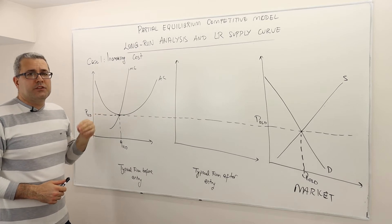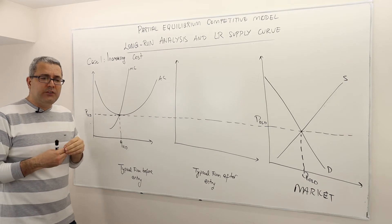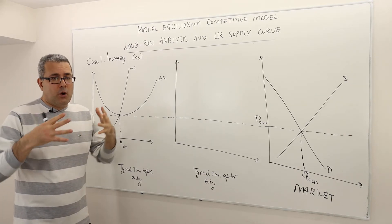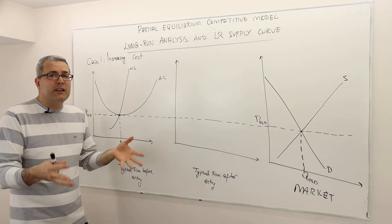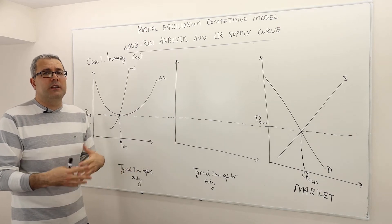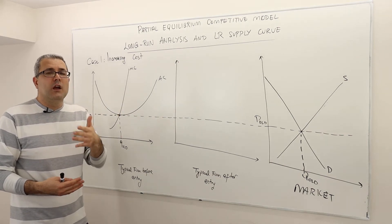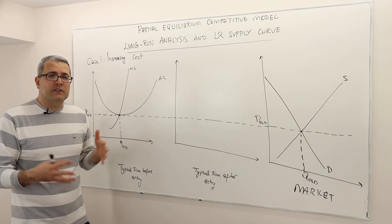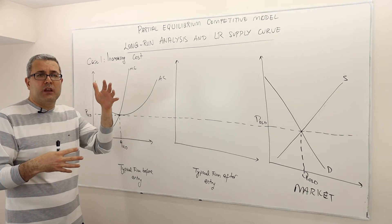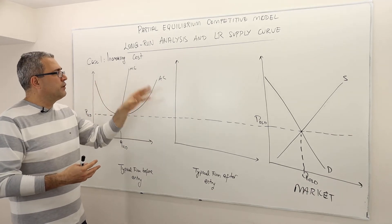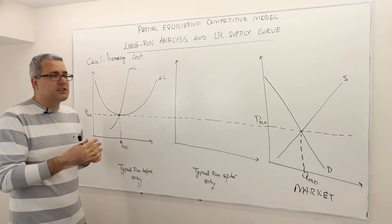Now let's look at the case where costs increase. When is this possible? Suppose that as new firms enter, they compete with existing firms for the limited number of workers available in the market, and additional firms drive up the input prices. The same may be true for capital. So additional firms can crowd out inputs and hence increase input prices, shifting the average and marginal cost curves for individual firms upward. This should affect the long-run supply curve.